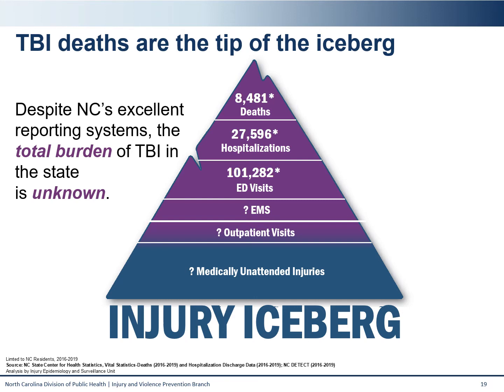Similar to unintentional falls, the overall impact of traumatic brain injury in North Carolina is unknown. With any injury topic like TBI, we must note that deaths are only the tip of the injury iceberg. Between 2016 and 2019, there were just over 8,000 deaths due to TBI and over 100,000 emergency department visits. This is smaller in magnitude compared to falls, which accounted for over 800,000 emergency department visits in the same time period.